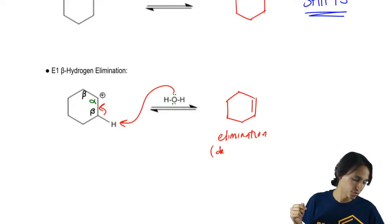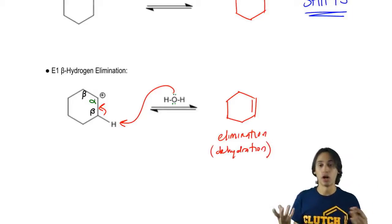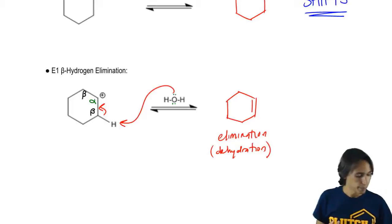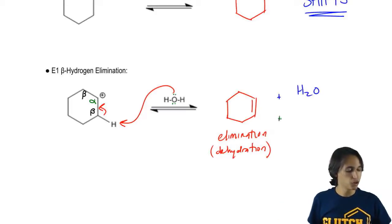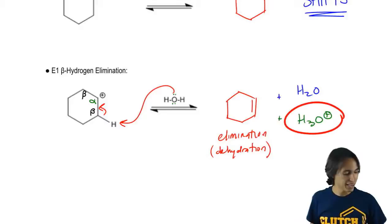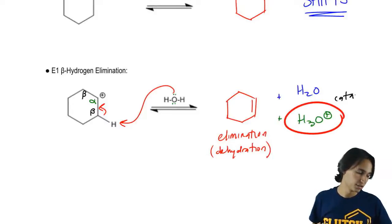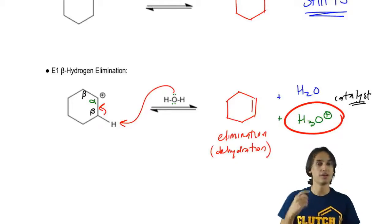Also what we call dehydration product because dehydration is just the name for an elimination with water or with alcohol. And we would get the leaving group originally, which was water. Remember that water left in that first step. And then we would also get H3O+. And what's the significance of H3O+, that that is my catalyst once again. And remember that we said it was important to get the same catalyst that you started with because that's the whole definition of a catalyst.